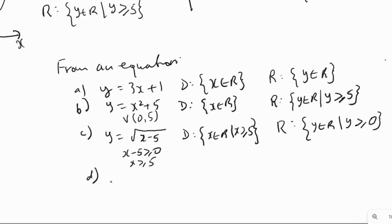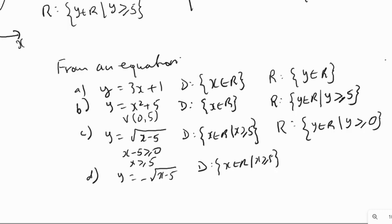For y = −√(x − 5), the domain is the same as before: x belongs to R with x ≥ 5. For the range, the negative sign means the output is always a negative number, or 0 when x = 5. Therefore, the range is y belongs to R such that y is less than or equal to 0.